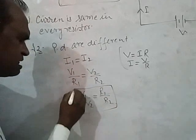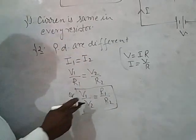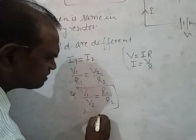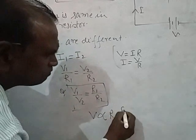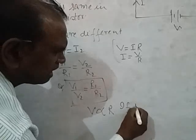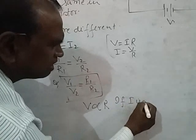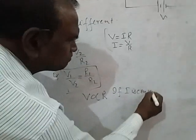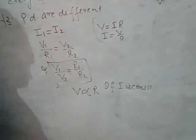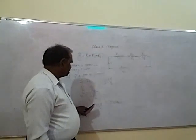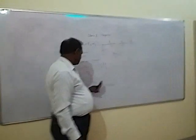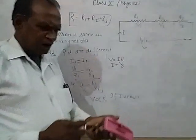If the resistance increases, the potential difference will also increase, which is directly proportional to R when I is constant. V is proportional to R.